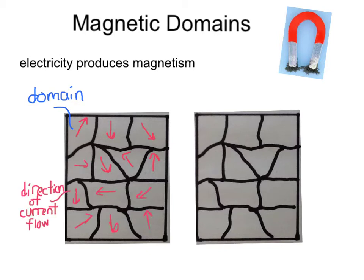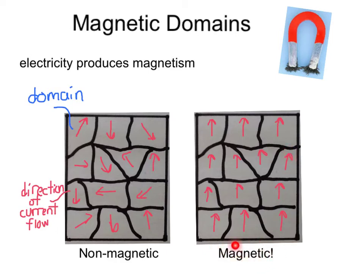If you notice, all the currents are flowing in different directions in each domain. Thus, this material is non-magnetic. However, in a magnetic material, the current flows in each domain start to line up and all flow in the same direction as shown. It is those lined up currents in each domain that cause this material to become magnetic.